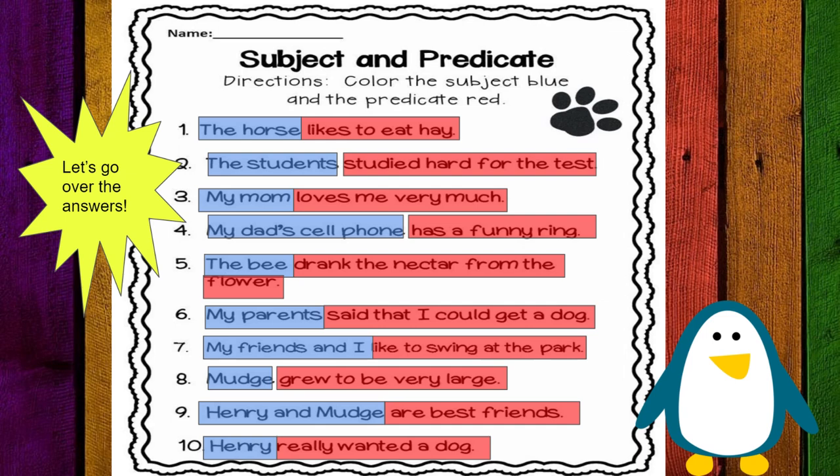The bee is the subject. Drank the nectar from the flower is the predicate.